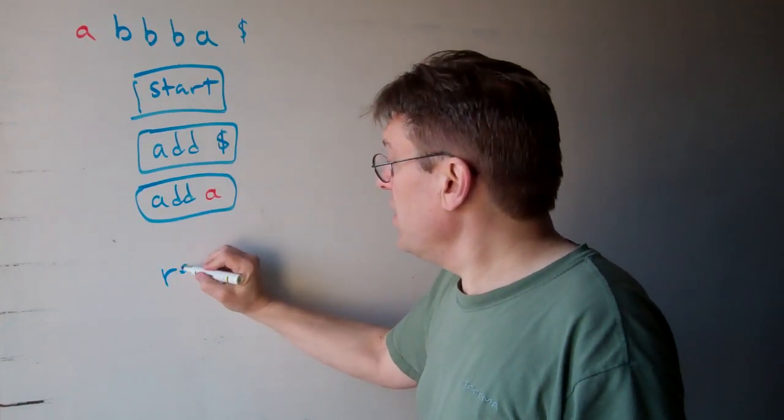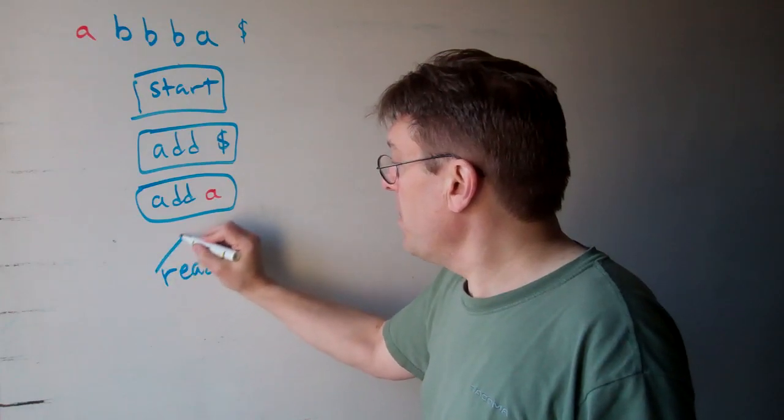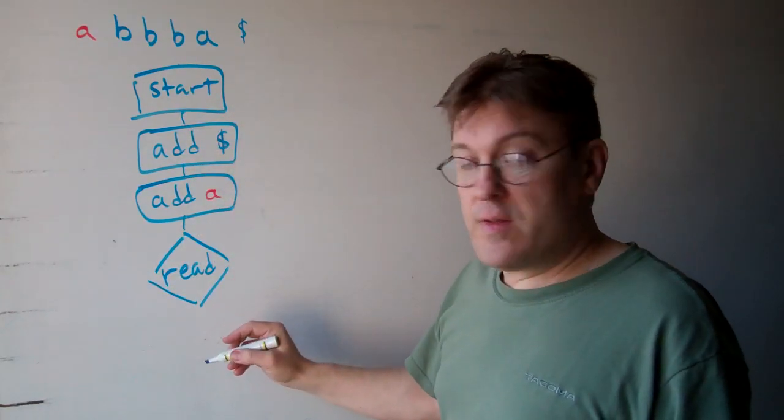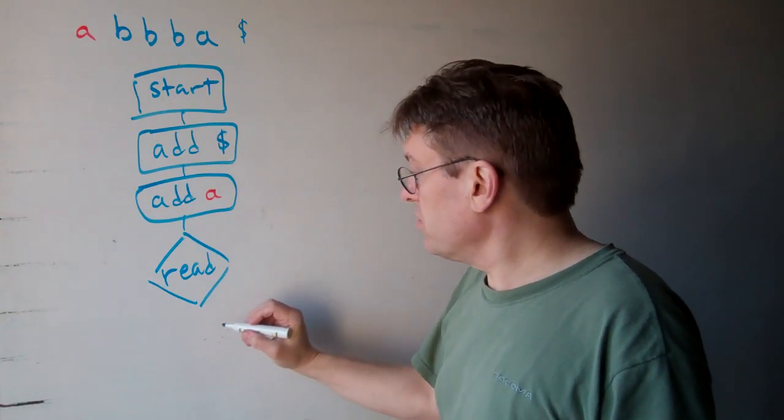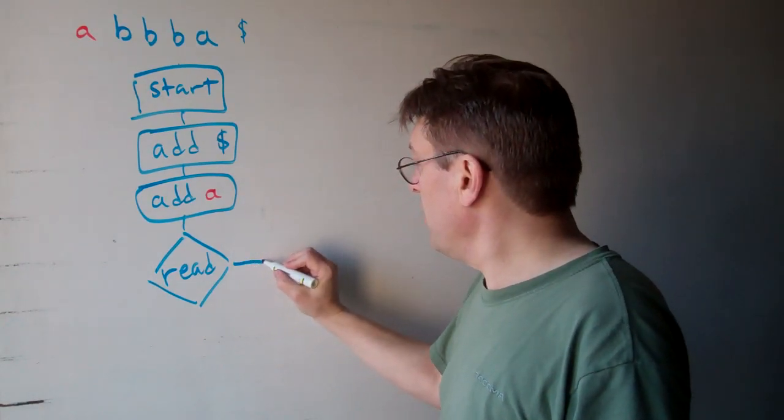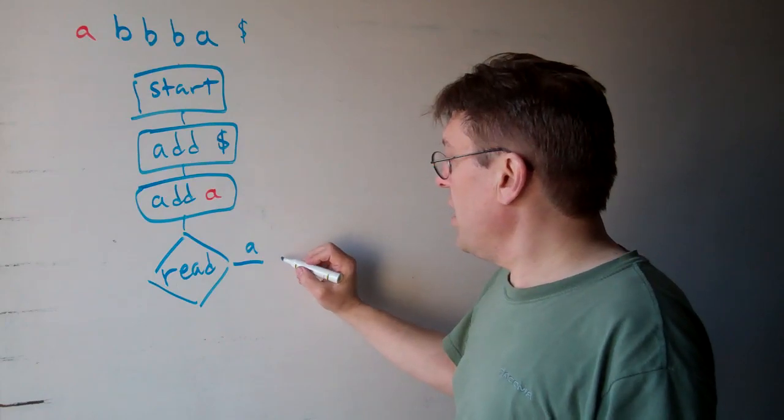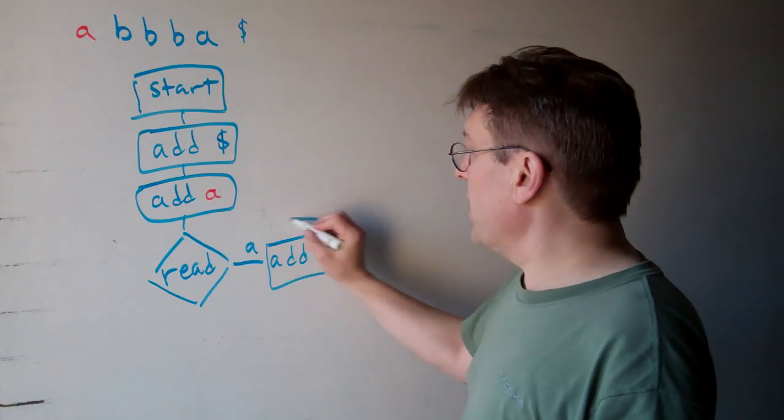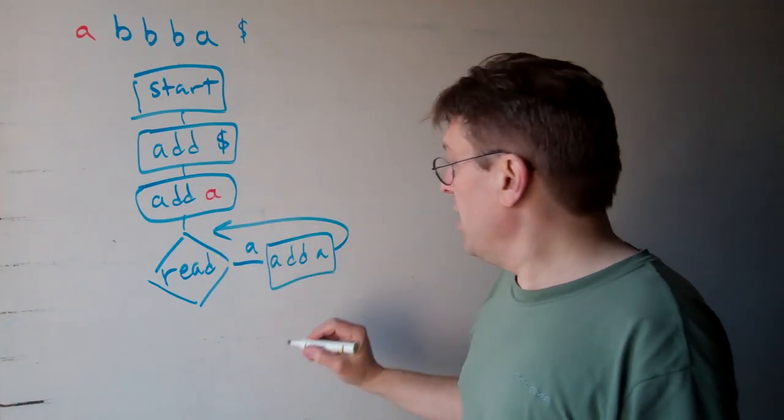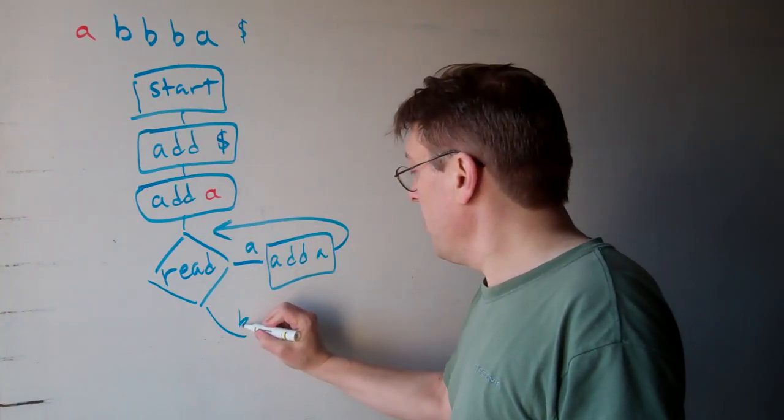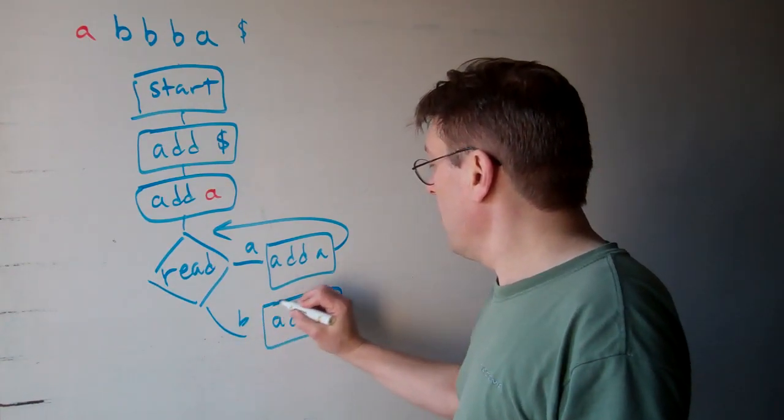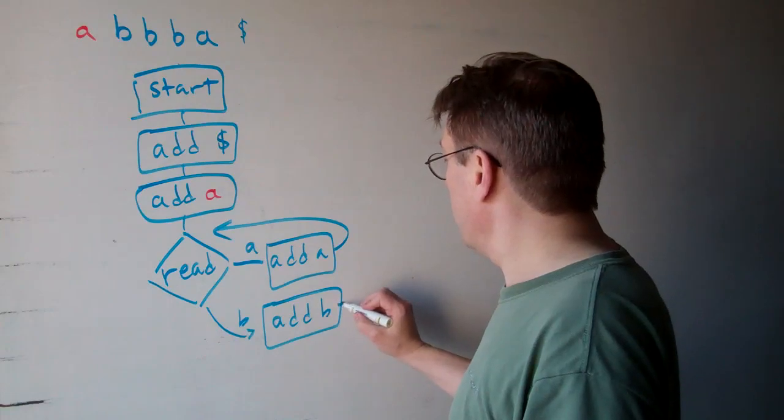So what we do is we read the next character. And if it's an A, we add an A and go back to the next read. If it's a B, we add a B and again just go back to the read again.